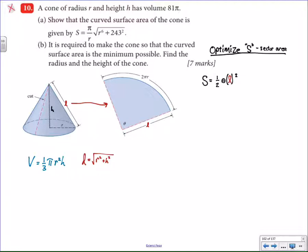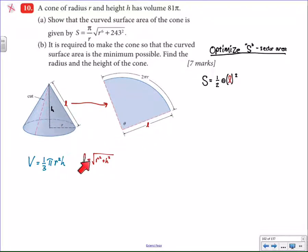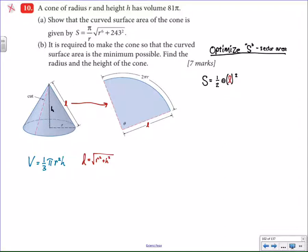I take the information that I have and put down some things I know right out of the gate. For example, I have information about the volume of this cone, so I write down the volume formula. And I know the connection between the slant height of the cone and the radius of the sector is a Pythagorean relationship, so I write that down as well. This should hopefully get me started expressing the area of the sector in terms of just the radius of the cone — as you can see, the radius doesn't even exist in this formula right now.